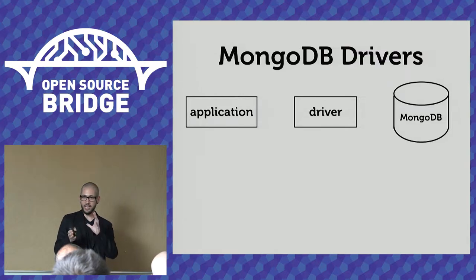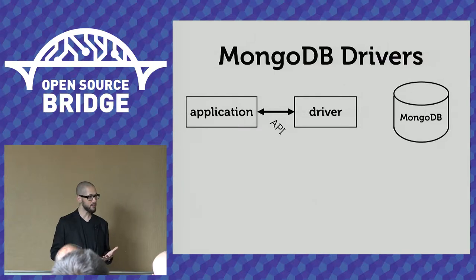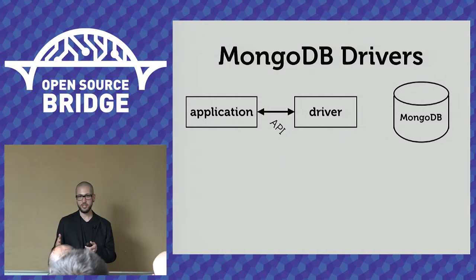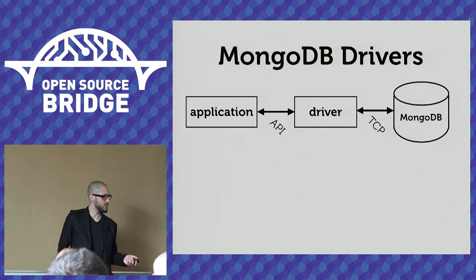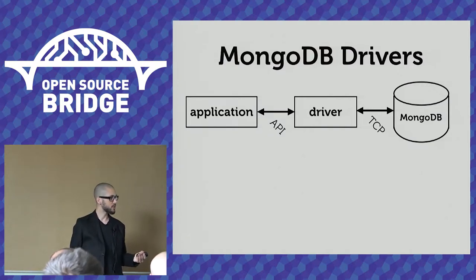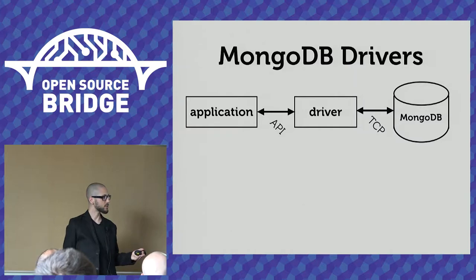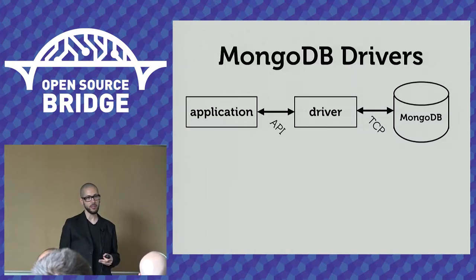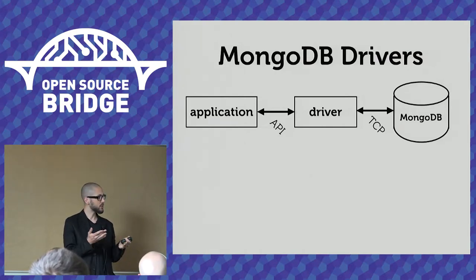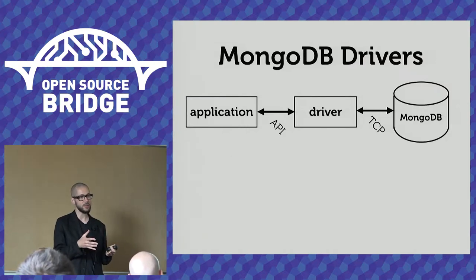The driver has two sides of communication. It's got its API — the data structures, functions, methods, and classes that your application uses to do operations on MongoDB. And then the driver also talks to MongoDB over the network using a wire protocol with TCP. Whatever language you write your application in, you need this stack available so you can use MongoDB from your programming language.